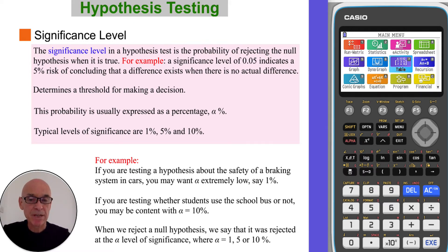Usually expressed as a percentage, typical levels of significance would be 1%, 5%, and 10%. So if you're testing a hypothesis about the safety of a braking system in cars you would obviously want the risk of making a wrong conclusion low. So you would test at say 1%. Whereas if you're testing whether students use the school bus or not you may be content with a 10% risk. So you would test at the 10% level.